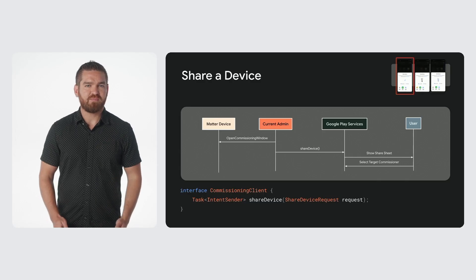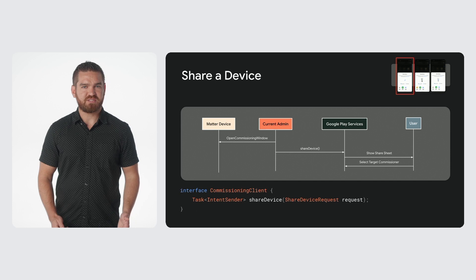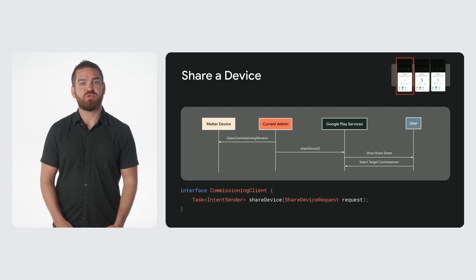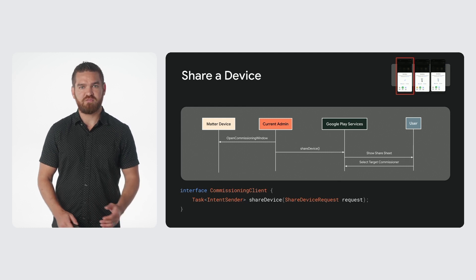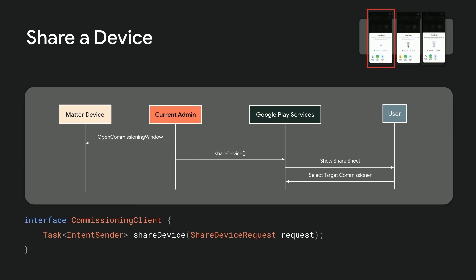The following diagram steps through this process with the preview flows at the top showing the current place in the flow. The current admin, in this case, is the administrator of the fabric. Using the share device function of commissioning client, you are able to share a Matter device which you administer for use within another Matter fabric or ecosystem.